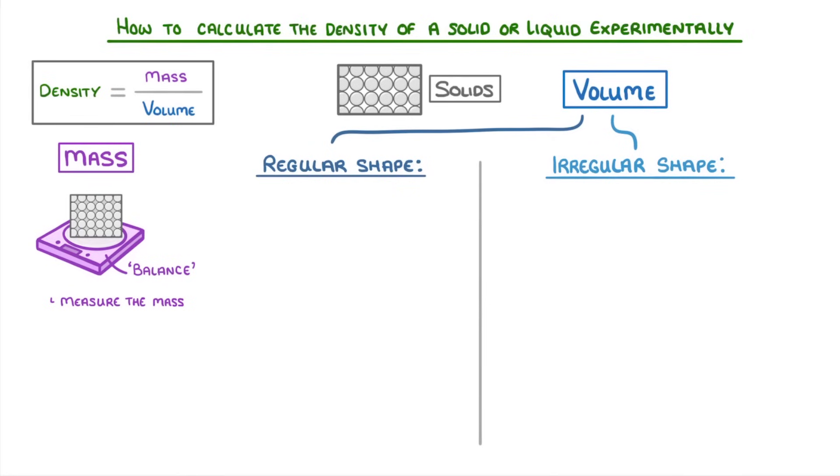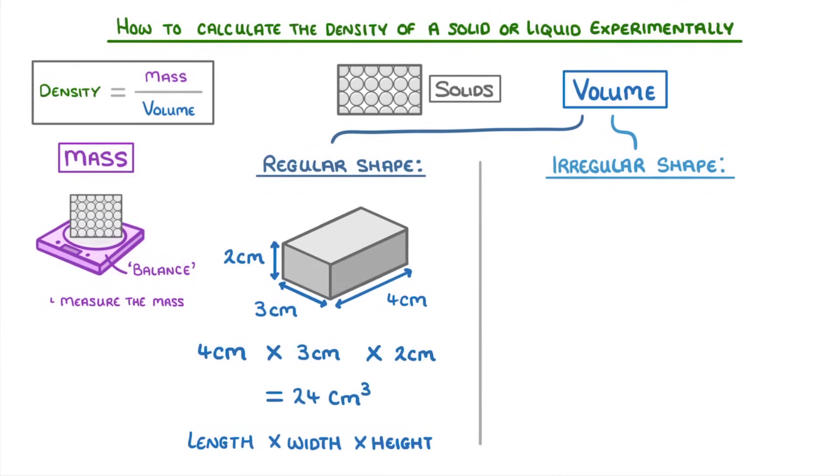If it's regular, like some kind of cube or cuboid, then we can find its volume by measuring and then multiplying its length, width, and height. So for this cuboid here, its volume would be 4 times 3 times 2, so 24 centimeters cubed.